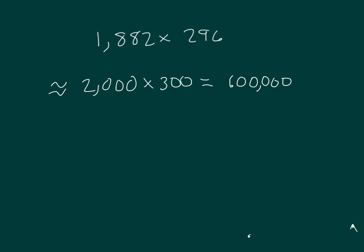Let's use our standard algorithm to figure out our actual product. Start with 6 times 2, which is 12. 2, regroup of 1. 6 times 8 is 48, plus 1 is 49. 9, regroup of 4.